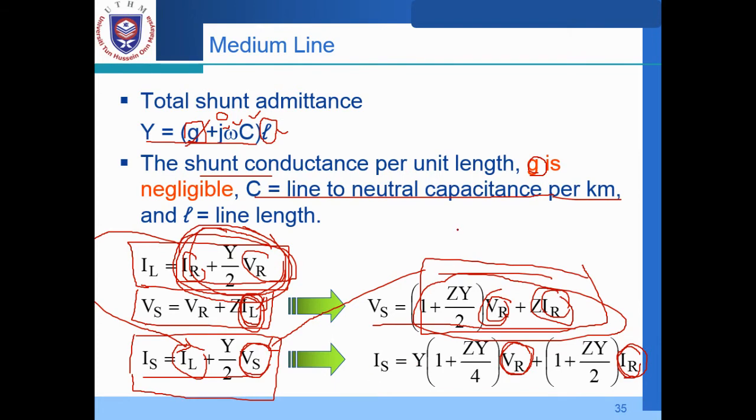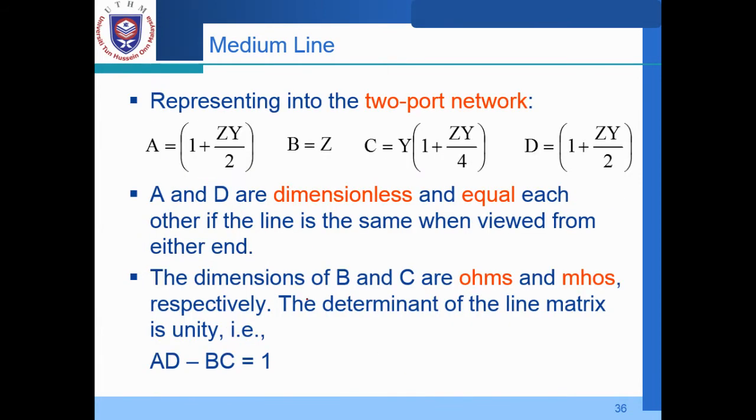And from here, I believe you can actually have the parameter of A or you may represent the parameter by A, B, C, and D. Just like we have in the short transmission line model. So representing the two port network. The port network A equal to 1 plus ZY over 2. So B equal to Z. C equal to Y multiplied by (1 plus ZY over 4). And then D, this is equal to A. We have 1 plus ZY over 2.